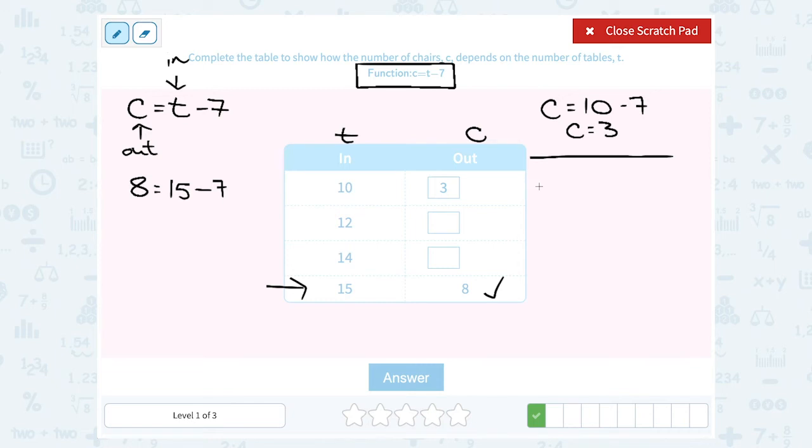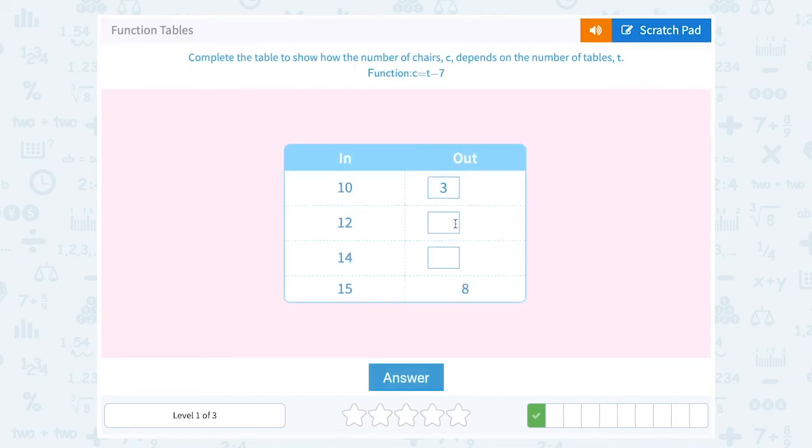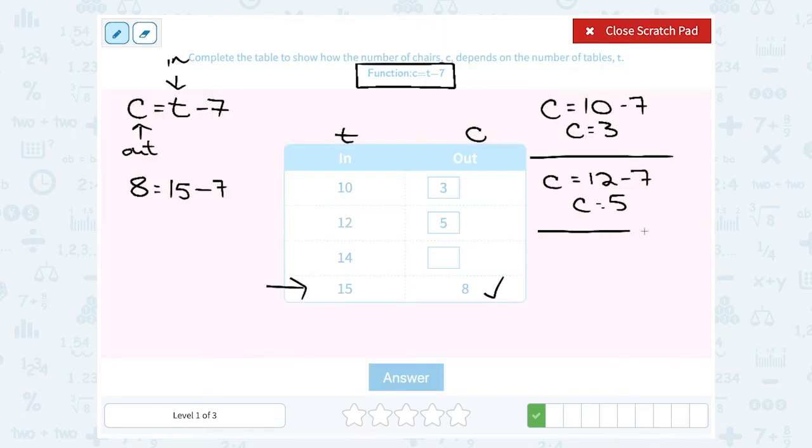Let's try our next number, 12. Well when we put 12 in for t, that would be 12 minus 7. Well 12 minus 7 gives us 5. So we get out 5. And then we have one more, we have to put in 14 for t. Well 14 minus 7 gives us 7. So we get out 7.